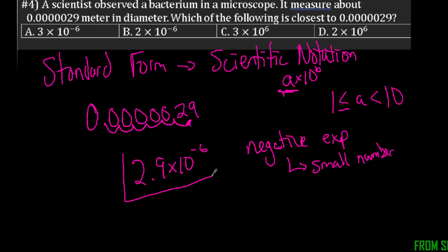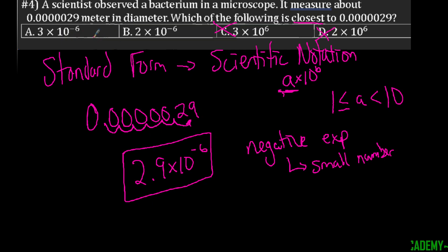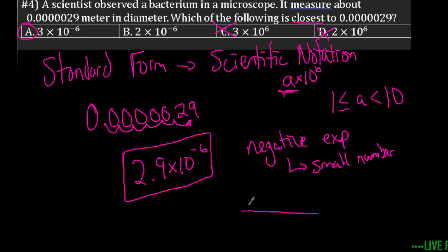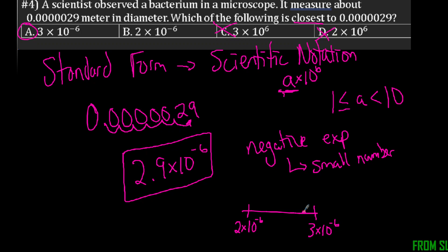Since none of the answer choices are exactly 2.9 times ten to the negative six, it's asking which is closest. The two choices with positive exponents can be eliminated. Looking at a number line, if I have 2 times ten to the negative six and 3 times ten to the negative six, my value of 2.9 times ten to the negative six would be closer to 3 times ten to the negative six. So that would be the answer.